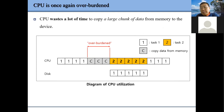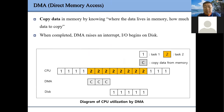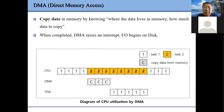Another issue is that we need to transfer data between memory and an IO device, and data transfer itself may take a very long time. So we introduce DMA — DMA is a hardware component. After we set up the source, the destination, and the size of data, DMA can help us do the transfer. In this way, we can free the CPU from data transfer so it can execute other processes.